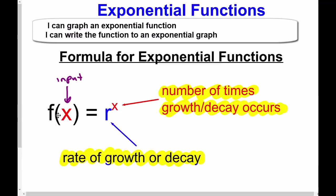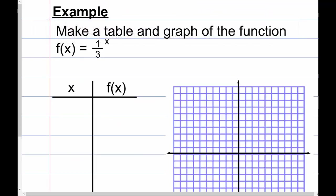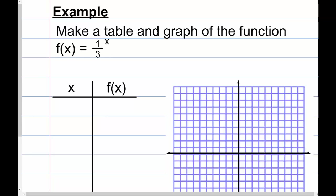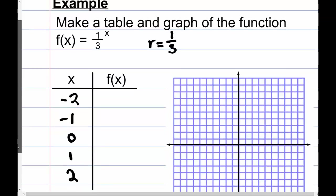Let's take a look at our first example — not a word problem, we're going to analyze an exponential function. The example says: make a table and graph of the function. We have f(x) = (1/3)^x. The rate is 1/3. Since it doesn't specify x, we're going to choose values: I'll pick negative two, negative one, zero, one, and two — negatives, positives, and zero — to get a good idea of what the range is doing.